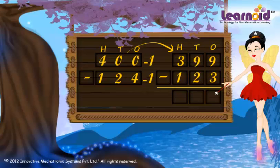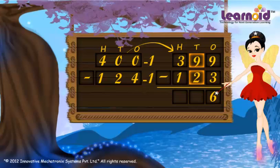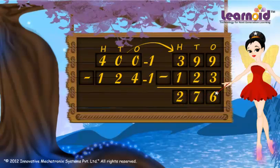Now subtract. Nine minus three is six. Nine minus two is seven. Three minus one is two. The answer is 276.